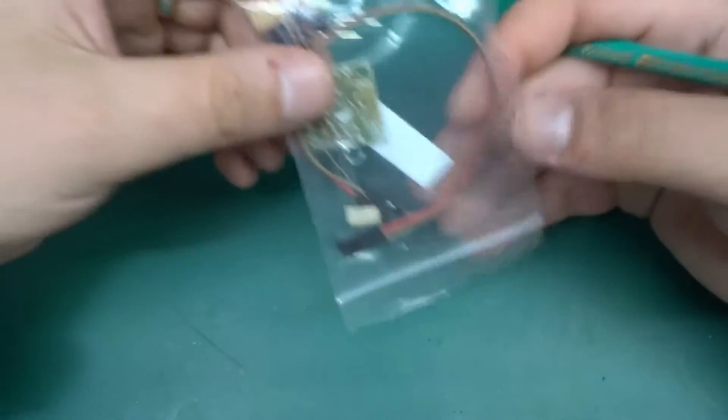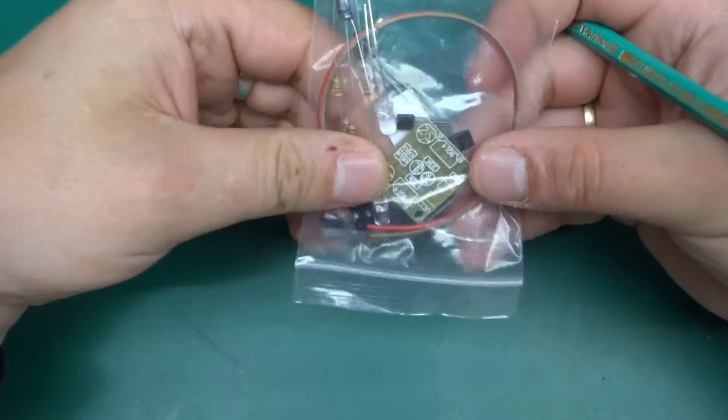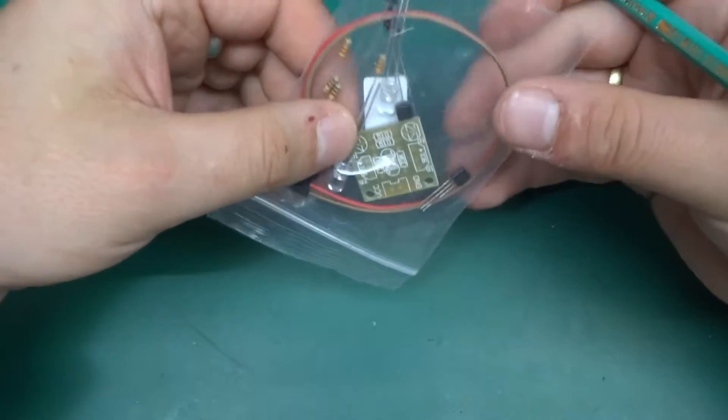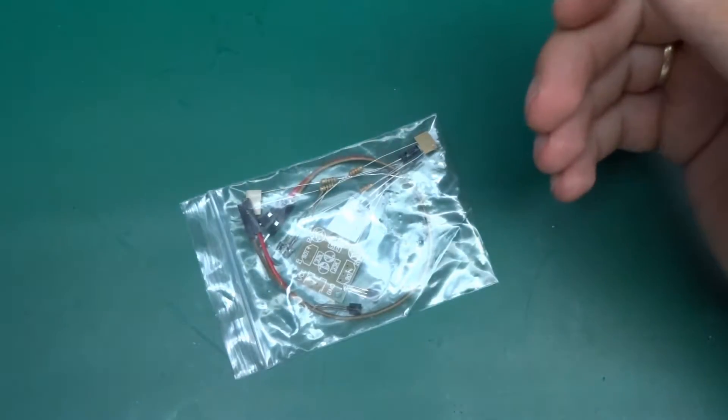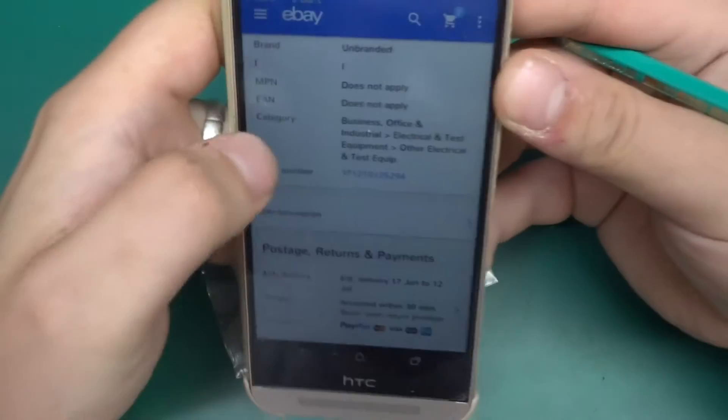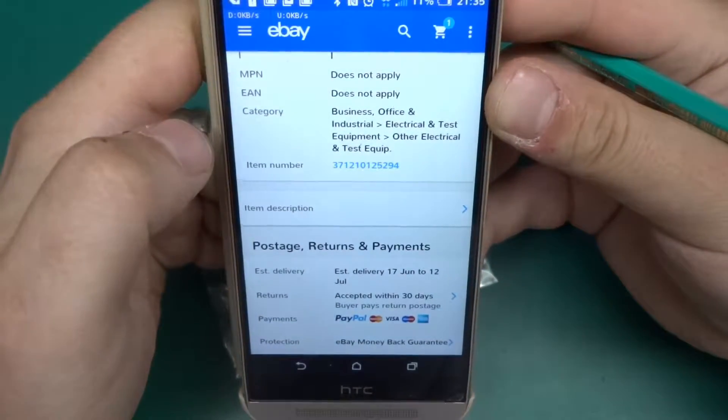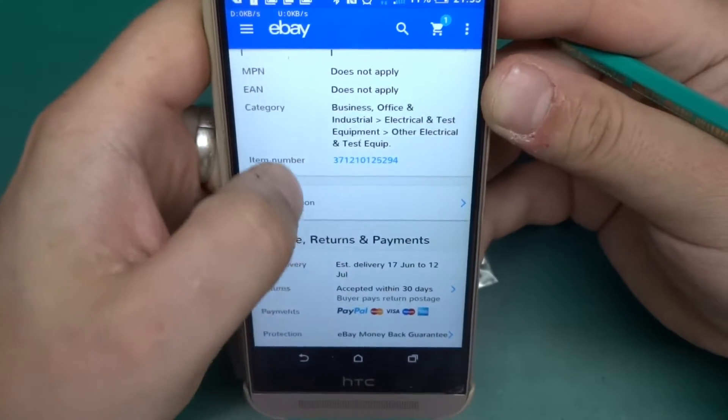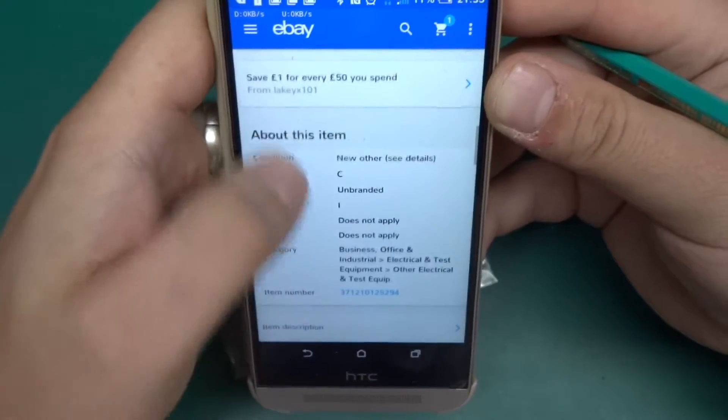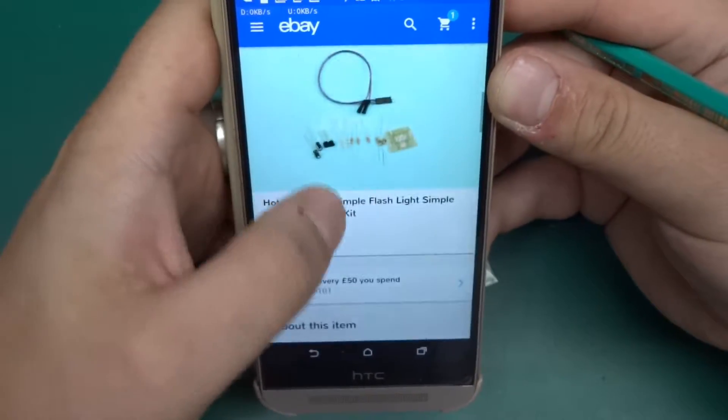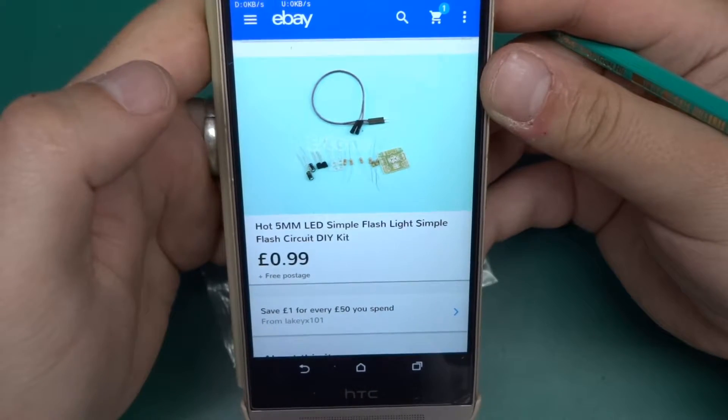Greetings! Today I'll be putting together a really small electronics kit from eBay. For those interested, the item number is 371210125294, and the cost for this was 99 pence delivered.